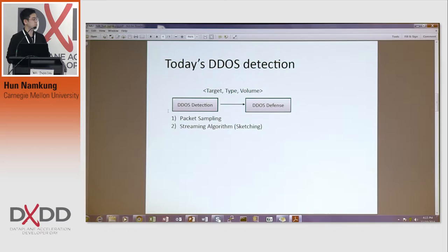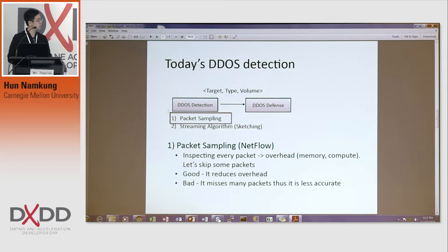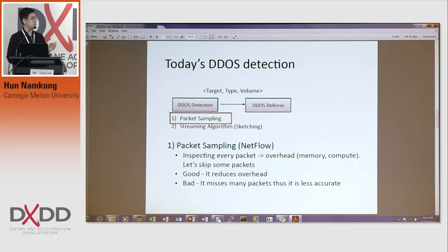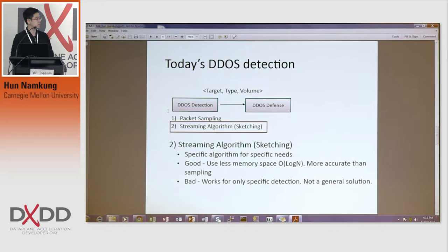There are two solutions for that. The first is packet sampling, which means you just skip many packets. For example, there is a famous application called NetFlow — you miss many packets and inspect only a small fraction, like 1 out of 100 packets. This certainly reduces overhead in terms of memory and compute power, but the bad thing is it misses many packets, so it is not accurate.